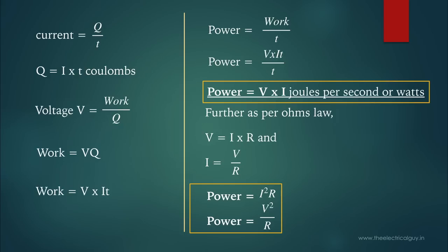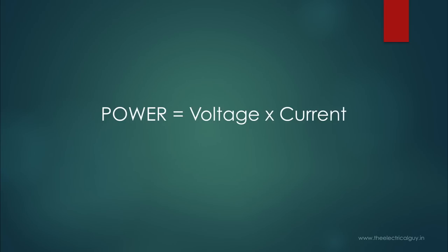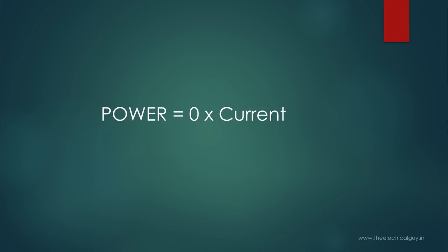One thing we should remember is that power depends upon both voltage and current. In an open circuit where current flowing through the circuit is zero, power will also be zero, no matter how great the voltage is. Similarly, in the case of a short circuit, voltage is zero, and hence power will also be zero, no matter how great the current is.